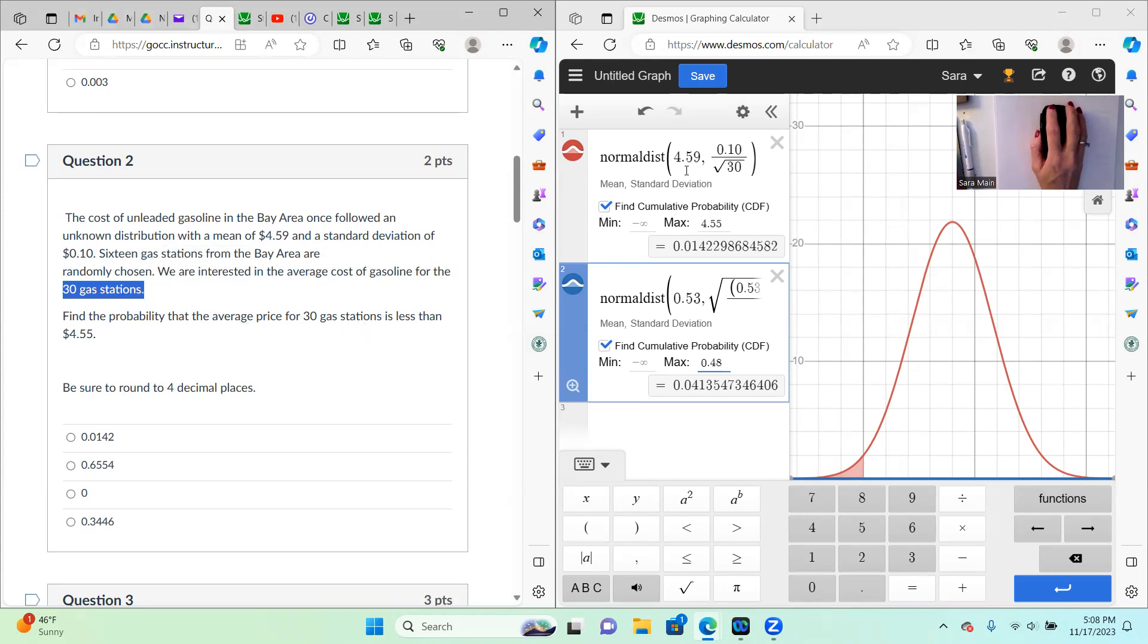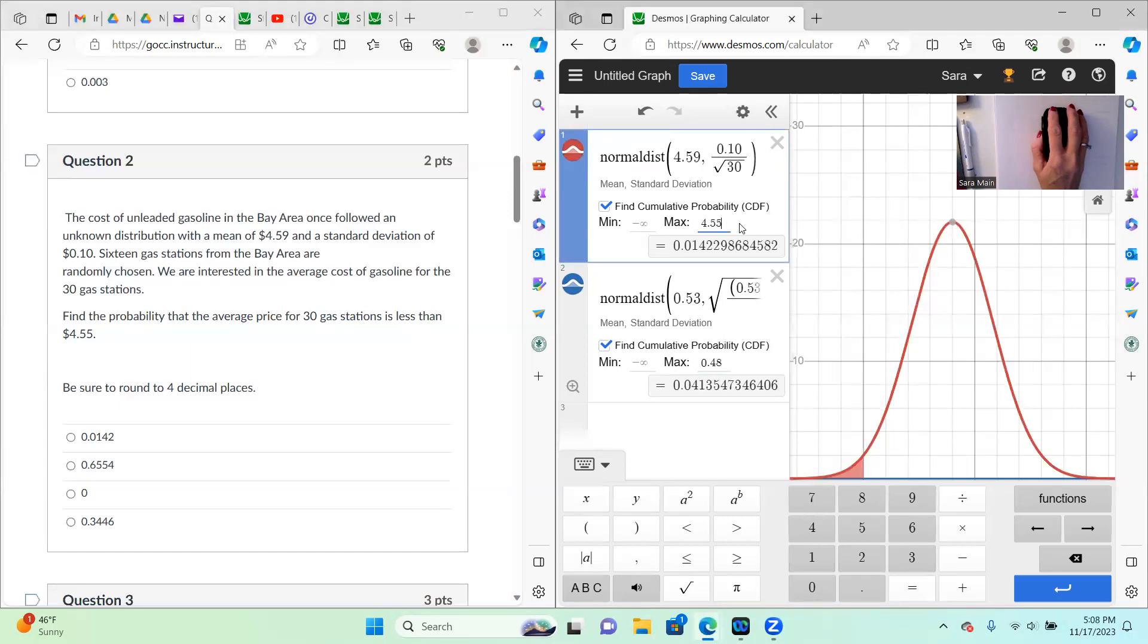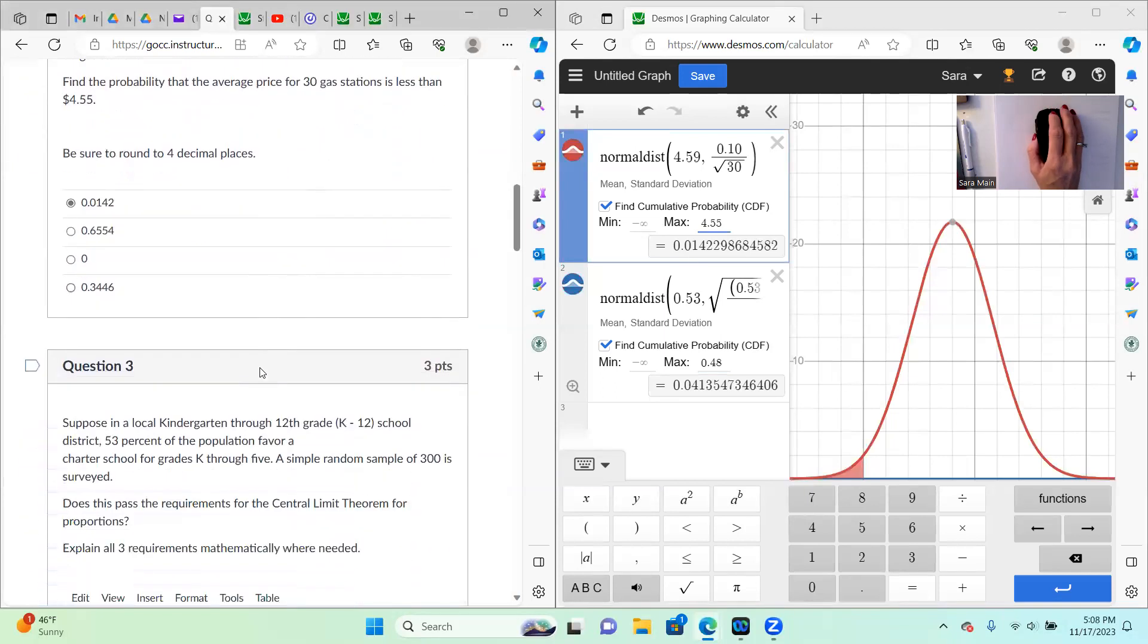So you can see over here in Desmos, I've got my mean at 459, my standard deviation is 10 cents, and I have to divide by the square root of 30 because I'm looking at the average for the 30 gas stations. And we want to know what is the likelihood that it's less than 455. 455 is going to be my maximum value, and that comes out to be 0.0142.